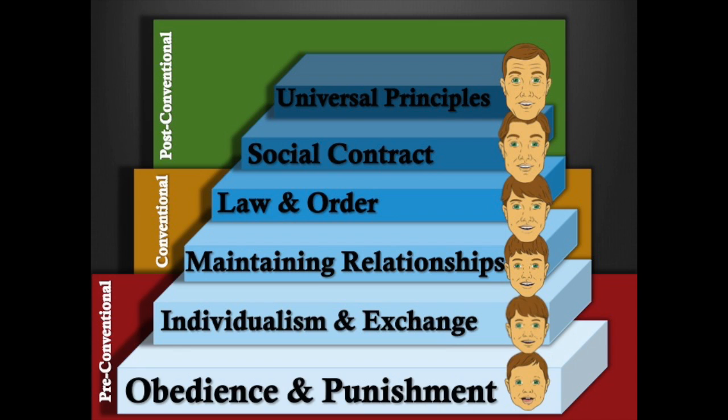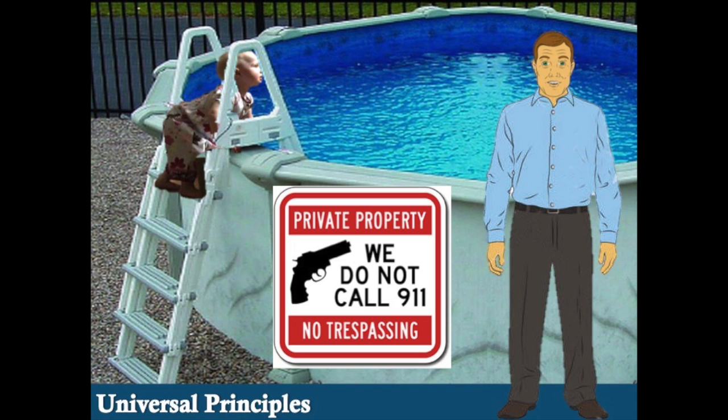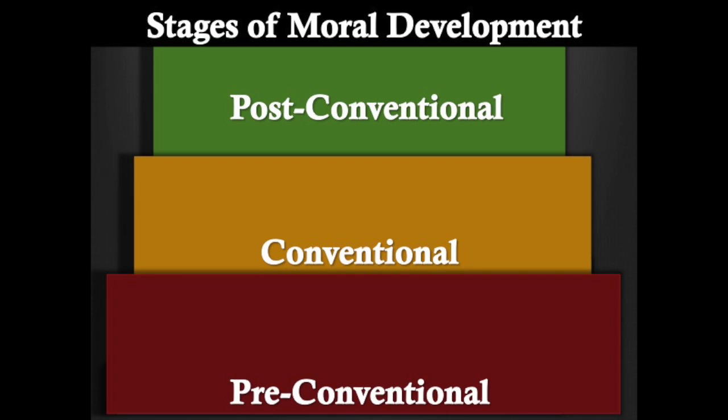Stage six: universal principles. At this stage, individuals are focused on upholding principles of life, liberty, and justice. They believe in the democratic process but also endorse disobeying unjust laws. Bobby is jogging around the neighborhood and passes a house with a 'No Trespassing' sign on the fence. He catches a glimpse of a toddler climbing the ladder of an above-ground swimming pool. The toddler falls in and there's no sign of an adult. Bobby decides to trespass and pulls the choking toddler out of the swimming pool.